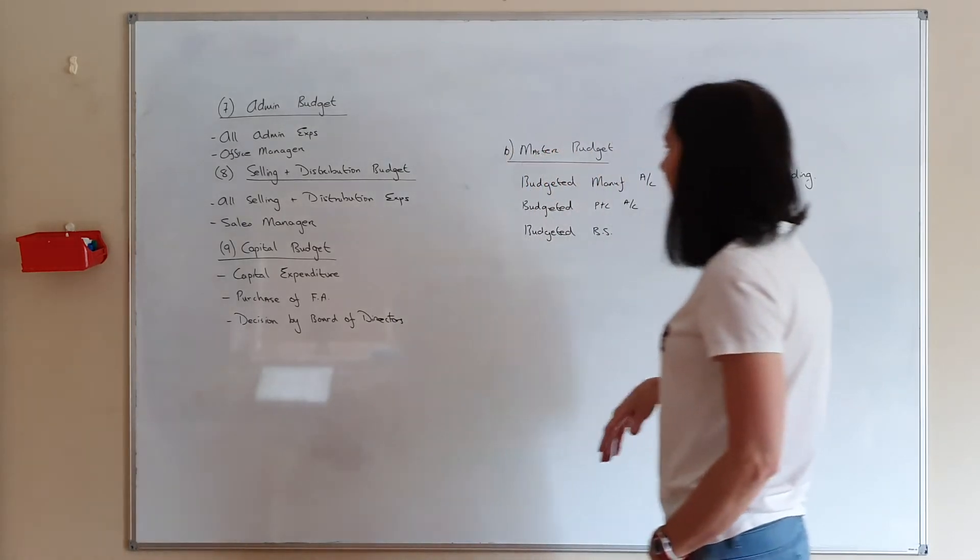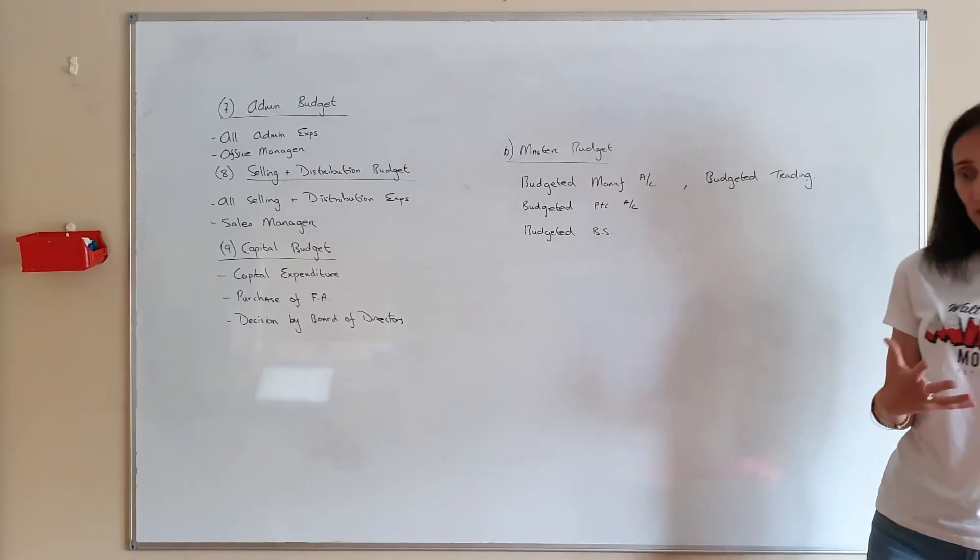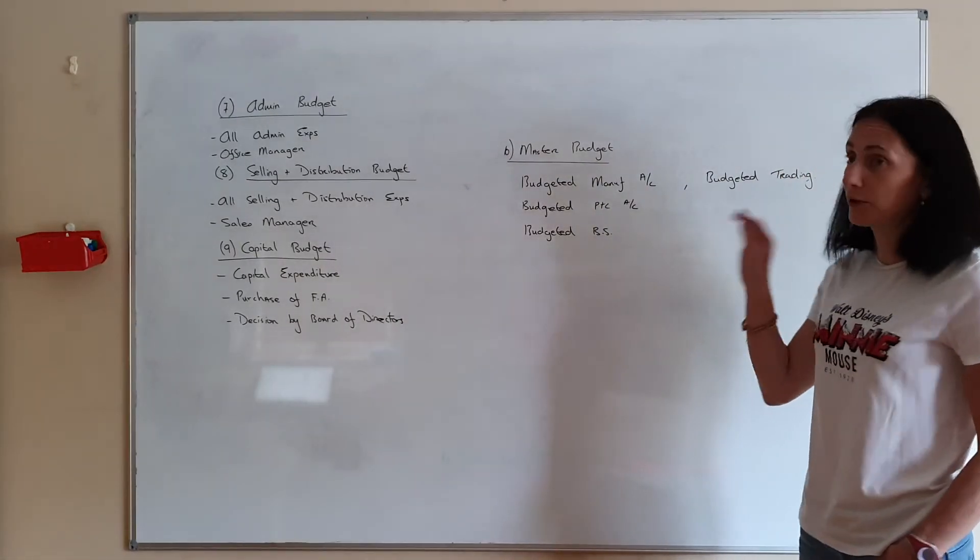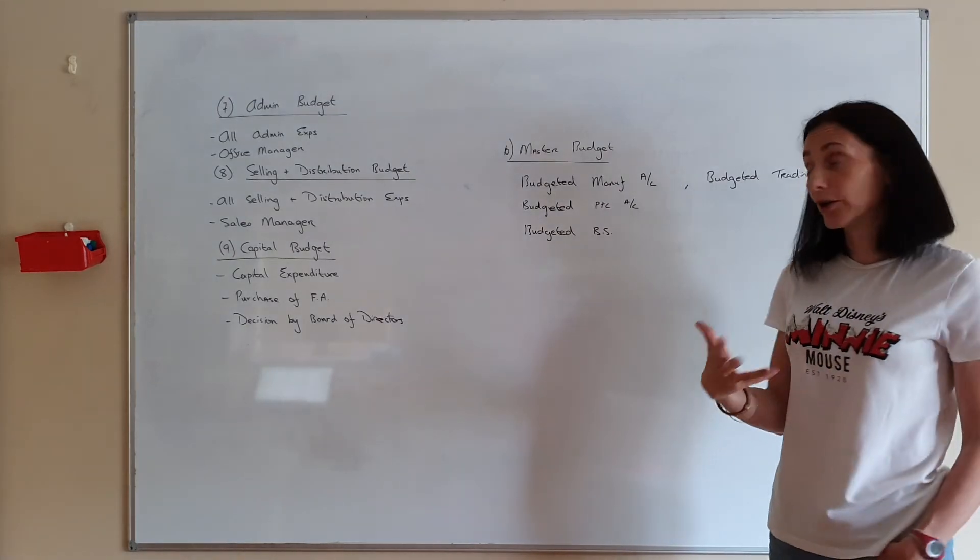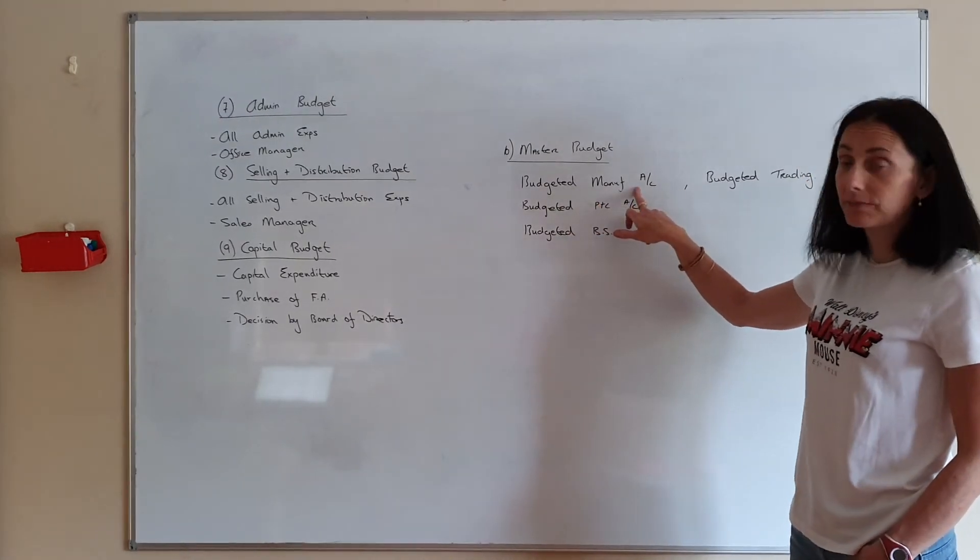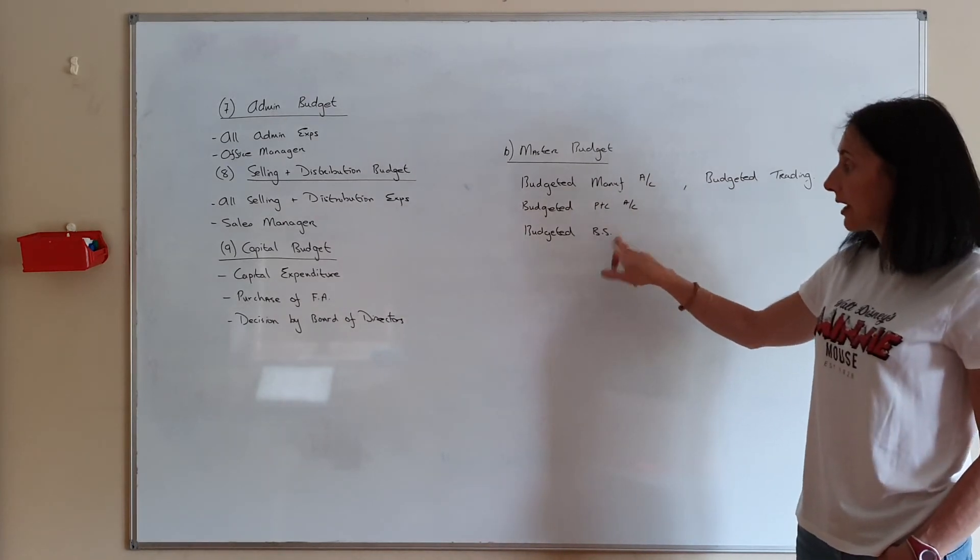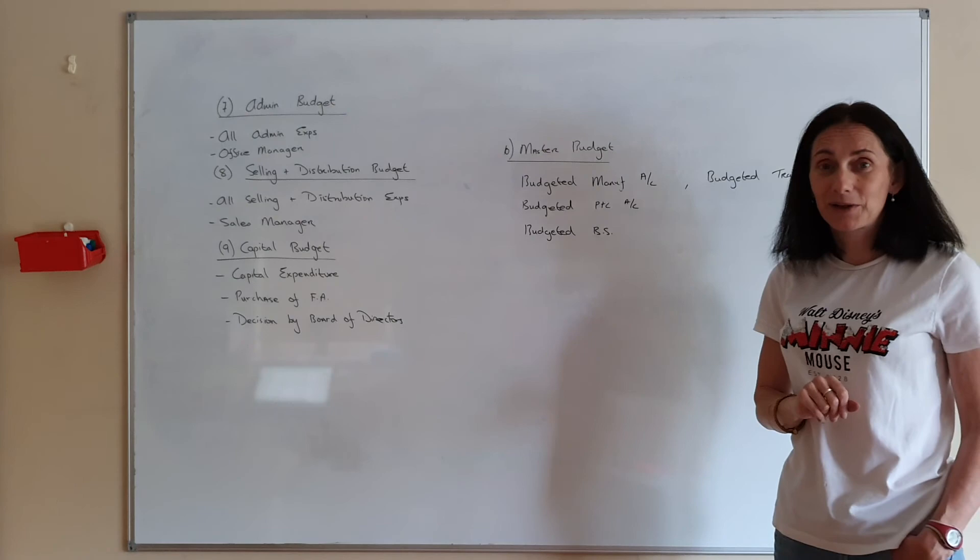Now number ten is your master budget. If you can imagine, the master is taking all the budgets into account. So depending on if you're a manufacturing account - so a trading company - you'd have a budget of manufacturing account, budget of trading account, budget of profit and loss account, and budget of balance sheet.